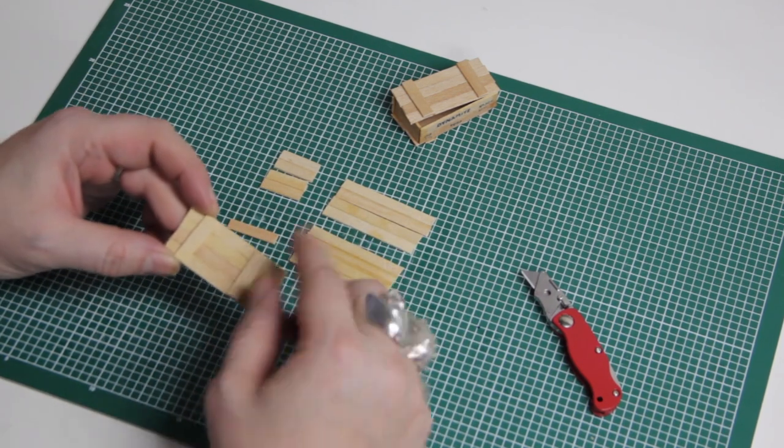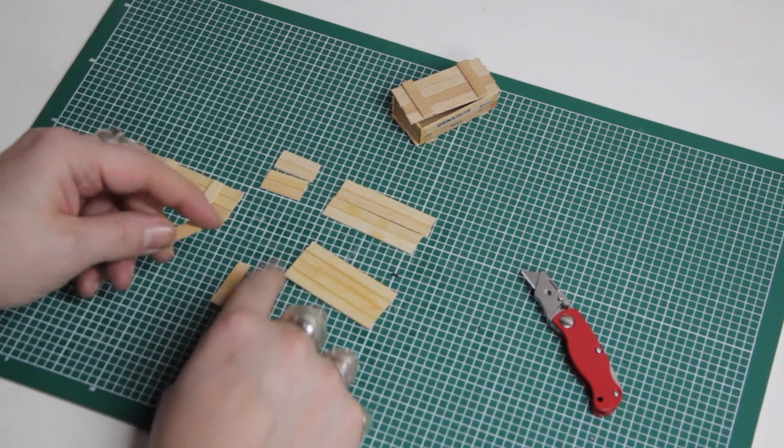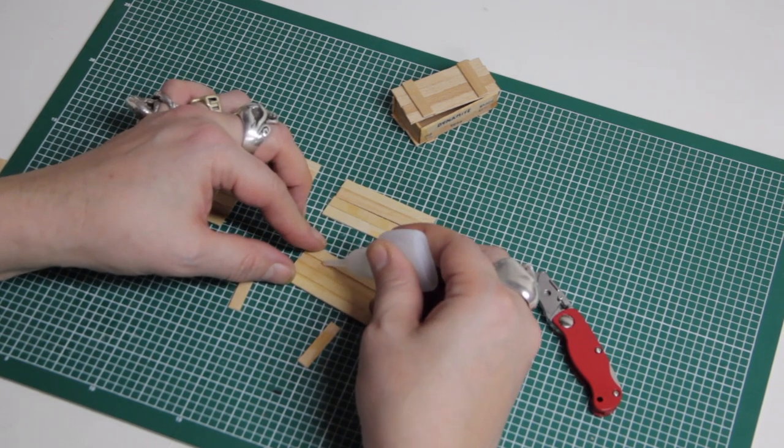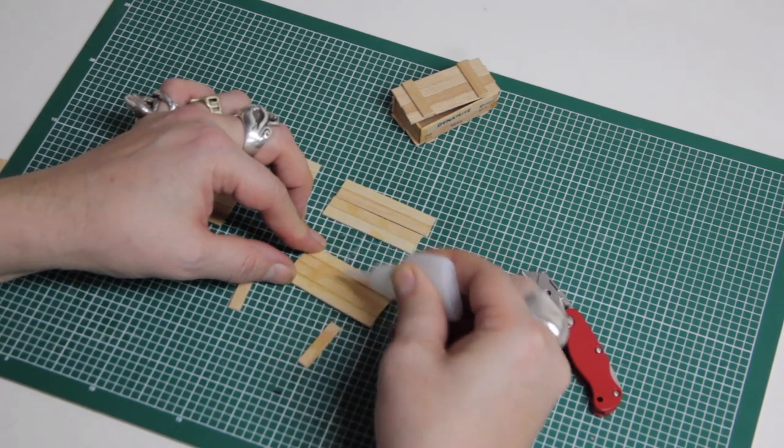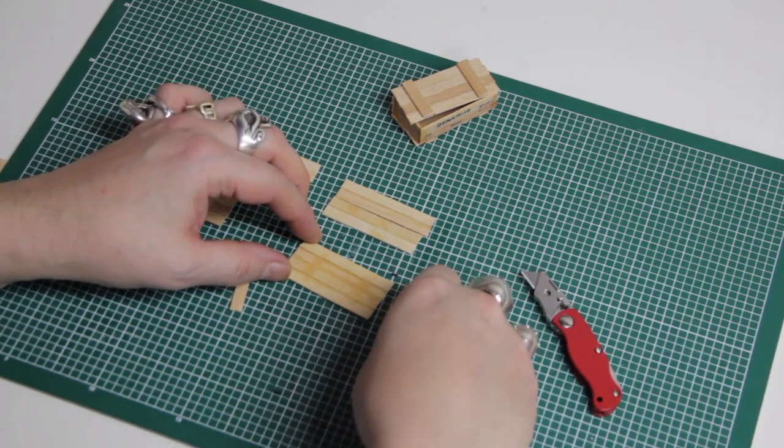You know, on crates you have like bits that are nailed in to make the lid go all together. So you need four of these. I've already cut two off and fitted them. And I'll fit these two. Again, rough and ready. Don't have to be exactly in the same place. These don't have to be straight. You can have bits going over the end.